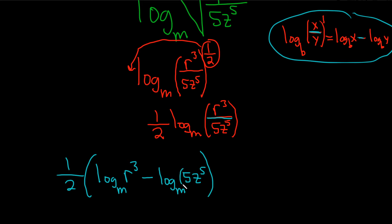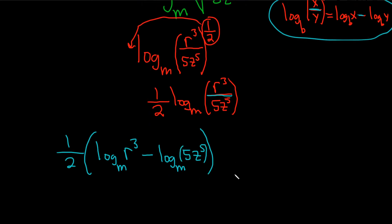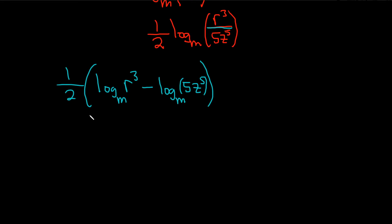All right, let's keep going. We can do a couple more things here. This is one-half. Here we have a 3, so we can use the power rule again and take the 3 and just put it in the front. So this is 3 log base m of r. And then here you're tempted to bring down the 5, but you can't do that yet because there's a 5 here. So we actually have to use the product rule. You see there's a times here. It's 5 times z to the 5th.